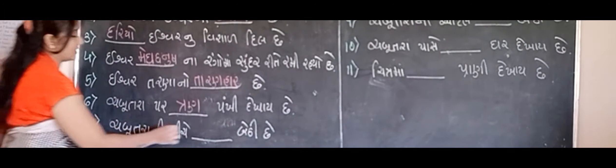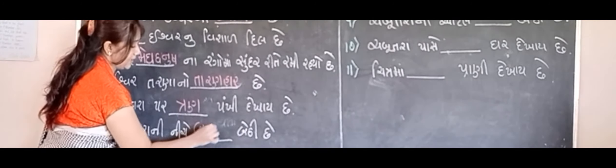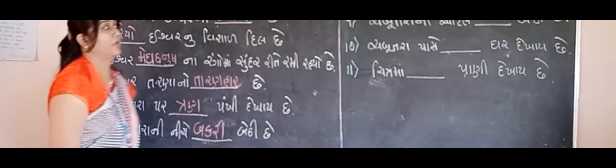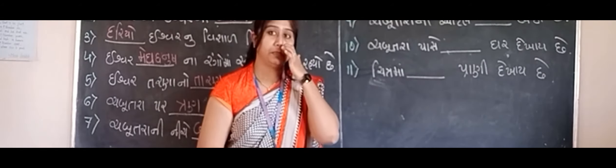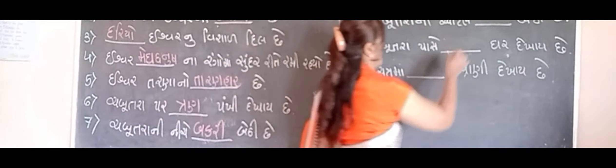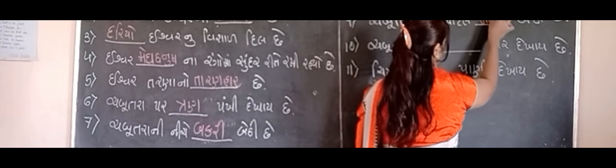પરવડી દેશ પા લટકે છે. પરવડી ક્યા લટકે છે? ચબુત્રાપર. પરવડી ક્યા લટકે છે — ચબુત્રાપર. એના કોટ લાગી ઉપર — કોંડ એસે ઉછે, મારસ, મારસ બટેલો છે.